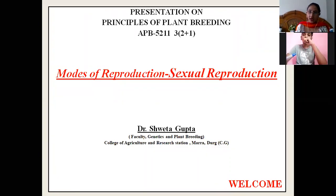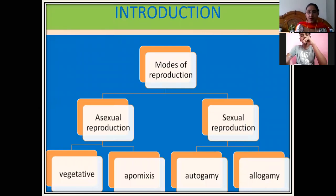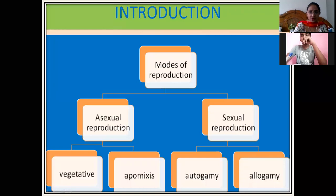Good morning students. Today our topic is about the modes of reproduction. In the last class we covered asexual mode of reproduction. Now in this class we will be studying about the sexual mode of reproduction. In this flowchart, there are two types: asexual reproduction and sexual reproduction. Asexual reproduction has two types — vegetative reproduction and apomixis. In sexual reproduction there are also two types: autogamy and allogamy, which we also call self-pollination and cross-pollination.